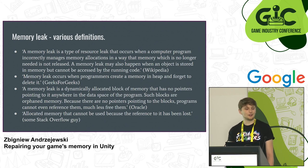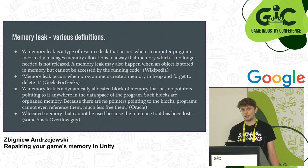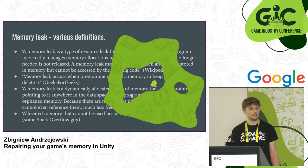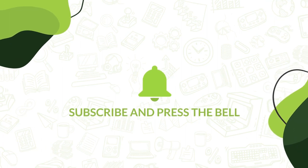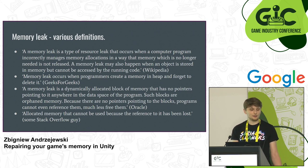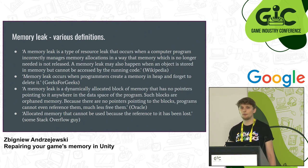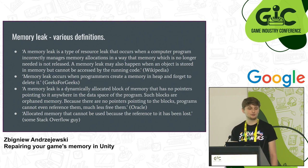Another definition says a memory leak occurs when programmers create memory on the heap and forget to delete it. That's true mostly in C++, not in C-Sharp, because you can't specifically delete managed objects in C-Sharp — you have a garbage collector. There's also: a memory leak is a dynamically allocated block of memory that has no pointer pointing to it. This also doesn't apply to Unity C-Sharp since we don't think in terms of pointers.